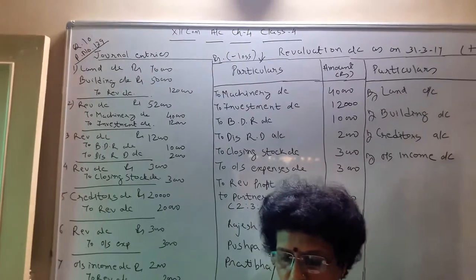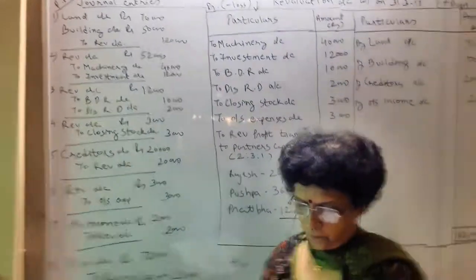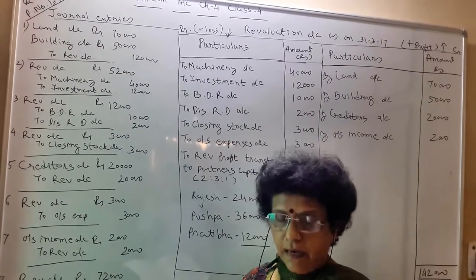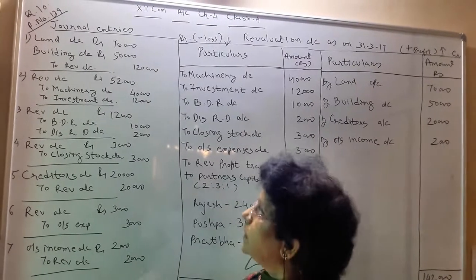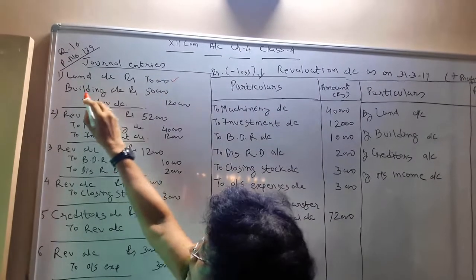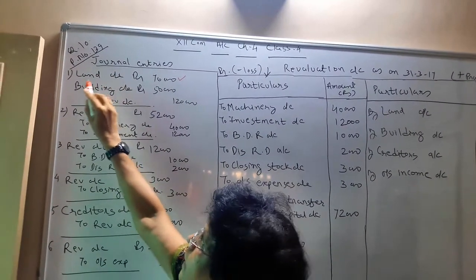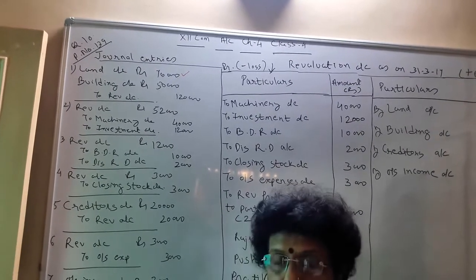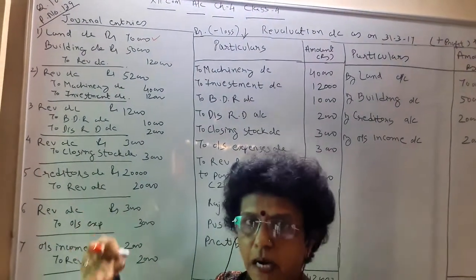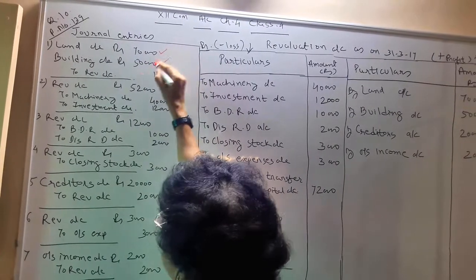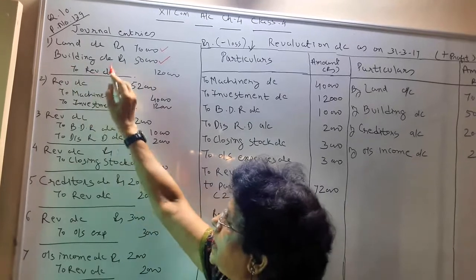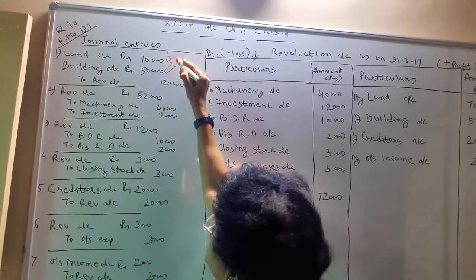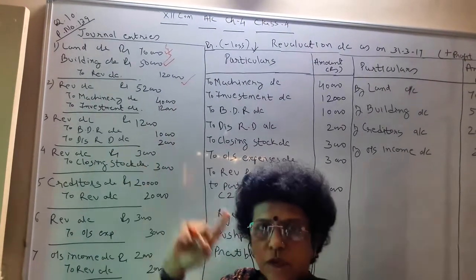Adjustment number 1: The value of land is to be increased up to 2,50,000 rupees. The land value given in the balance sheet is 1,80,000, and they are increasing it up to 2,50,000 — so the difference is 70,000. Land is an asset, so the asset is debited more by 70,000. Building value increases by 50,000 — building is also an asset increased by 50,000. Because of both land and building value increase, that gain is credited to revaluation account. The total of these two comes to 1,20,000. So your first adjustment is over.